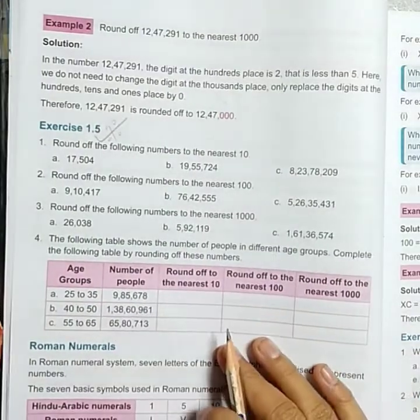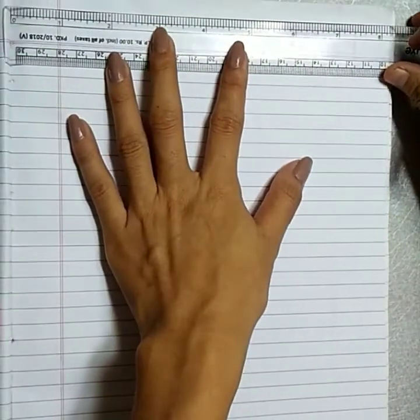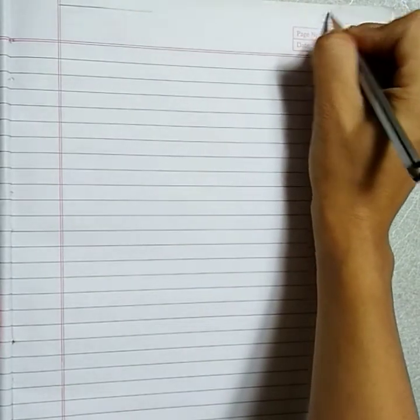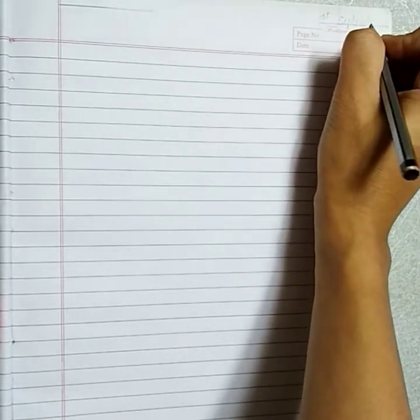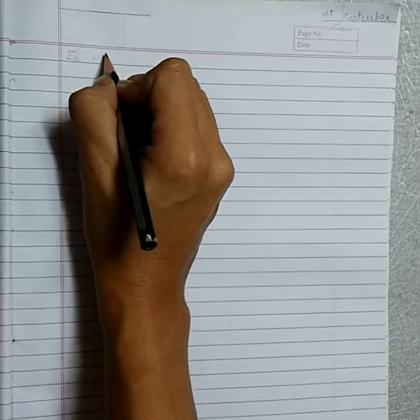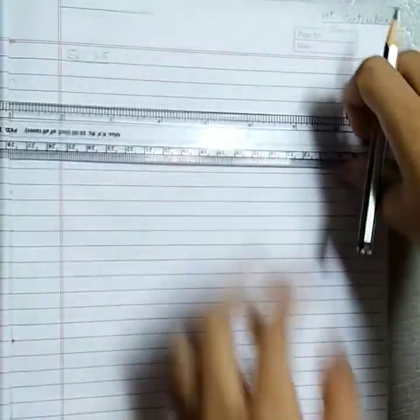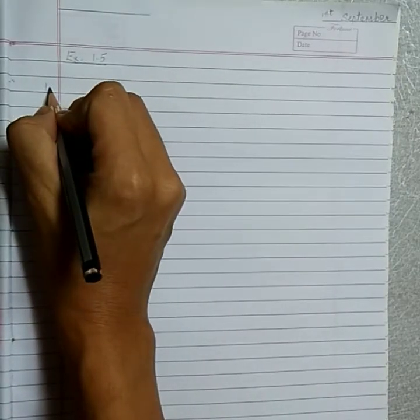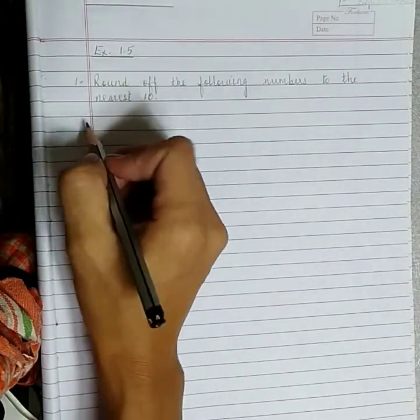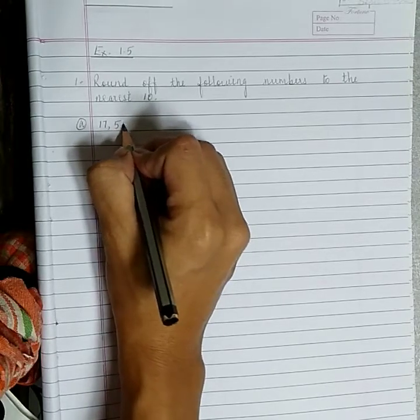Today's assignment will be from Exercise One Point Five. Draw two lines for your name and for today's date. Today is first September. You will write the number of the exercise, Exercise 1.5, and then underline it.